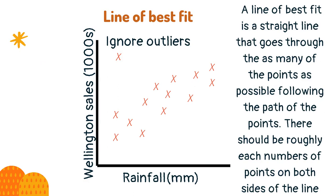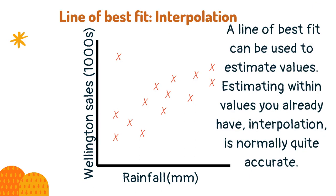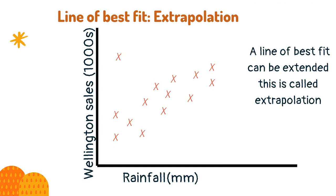A line of best fit is a straight line that goes through as many of the points as possible, following the path of the points. There should be roughly equal numbers of points on both sides of the line. A line of best fit can be used to estimate values. Estimating within values you already have — interpolation — is normally quite accurate. A line of best fit can be extended; this is called extrapolation. This extended line can be used to predict values, although this is less accurate.